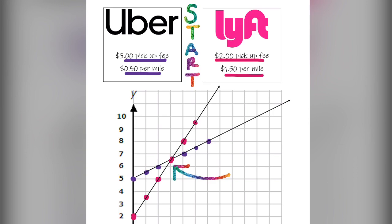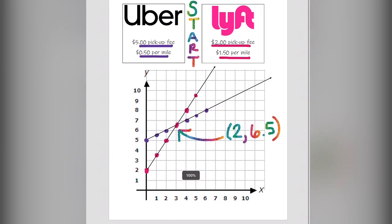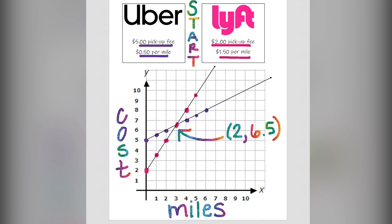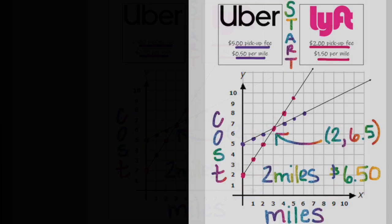Here is the point at which they intersect: (2, 6.5). But what do those numbers mean? The x-axis represents the number of miles you travel and the y-axis represents the total cost. So the intersection represents that at 2 miles, either company will cost $6.50.